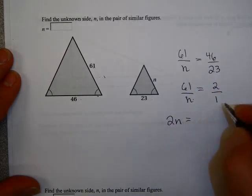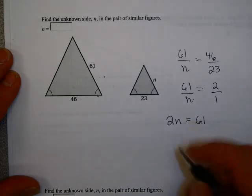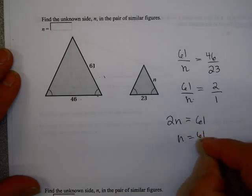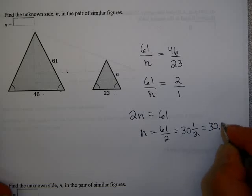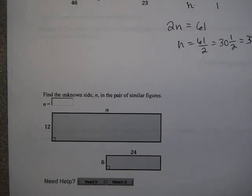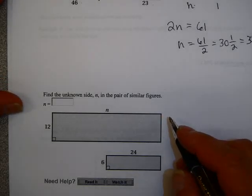Forty-six over twenty-three is two over one, so that will make my life a little bit easier. And cross-multiplying, I get two n equals sixty-one. So, n equals sixty-one over two, which is thirty and a half, or thirty-point-five. See if you can do this one, this also being from WebAssign. Start the video again when you have an answer.